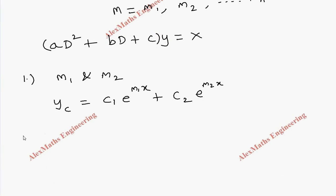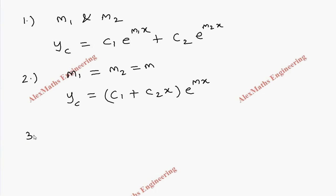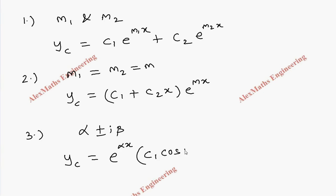Suppose if the two values m1 and m2 are both equal to m, then we write the complementary function as (c1 + c2 x) e^(mx). Suppose if we get an imaginary root, that is alpha plus or minus i beta, then the complementary function is e^(alpha x) times (c1 cos(beta x) plus c2 sin(beta x)).